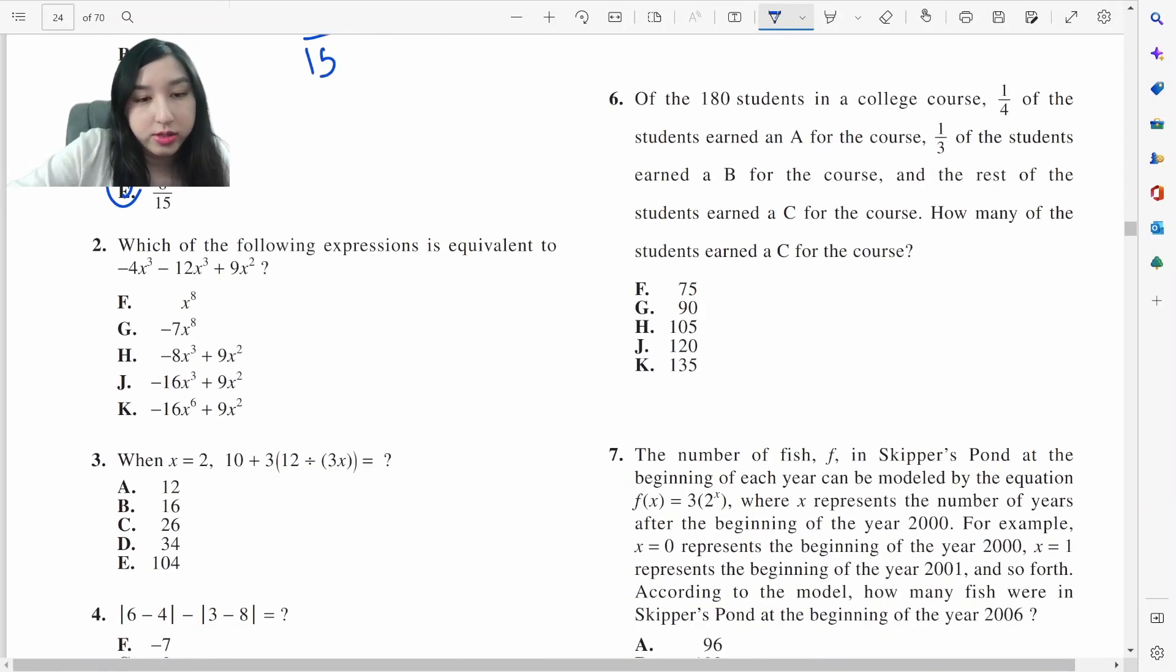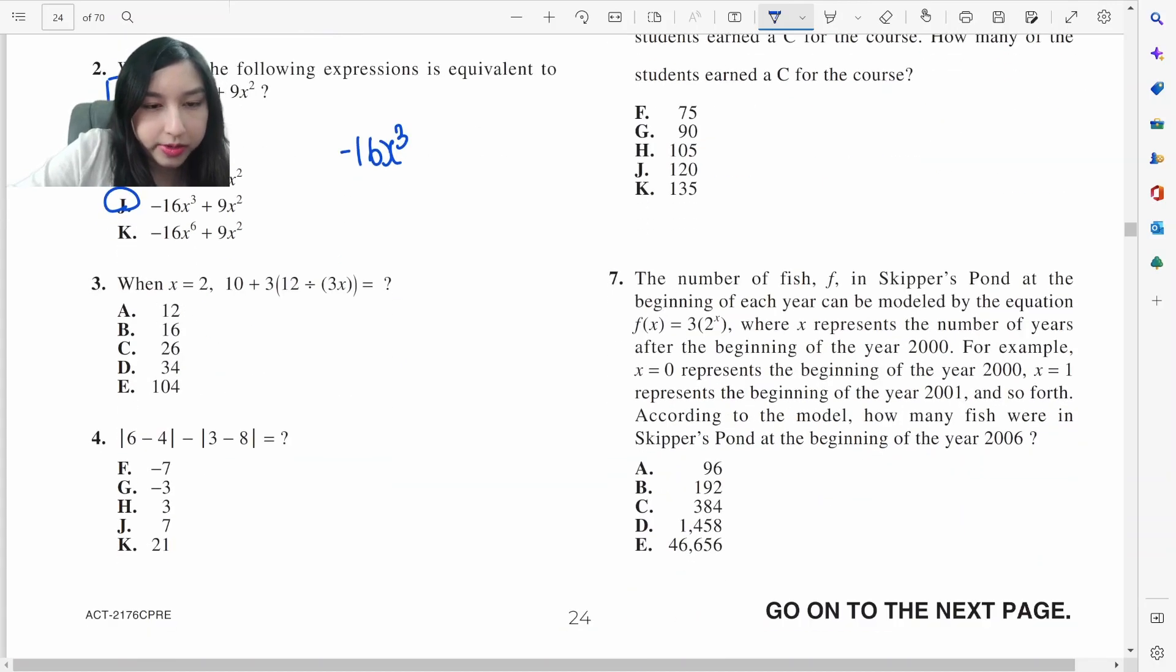Which of the following expressions is equivalent to this? We just have to combine like terms here, we will get negative 16x cubed. And only J has that. When x equals 2, so this is 6, 12 divided by 6 is 2, 2 times 3 is 6, 10 plus 6 is 16.